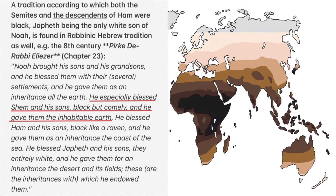The first source is the Pirkei of Rabbi Eliezer from the 8th century, which says: 'He — being the Most High — blessed Shem and his sons, black but comely, and he gave them the inhabitable earth.' So Shem is blessed as black but comely — black but beautiful — and he and his descendants were given the inhabitable earth.